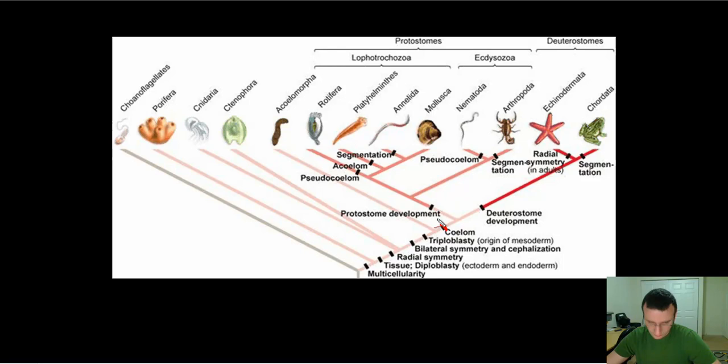But they put the pseudocoelomates later, almost as if the pseudocoelomates evolved from coelomates instead of the other way around. Also, they have the segmentation happening here on the annelids,